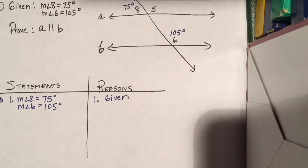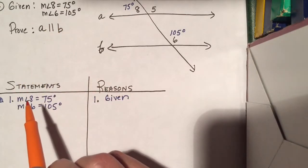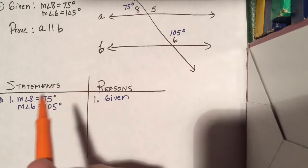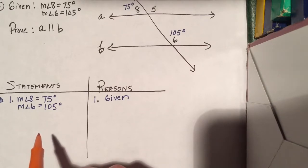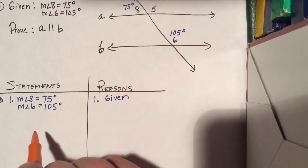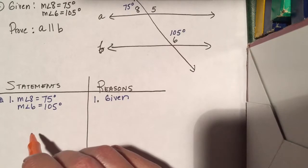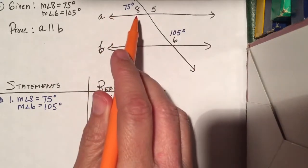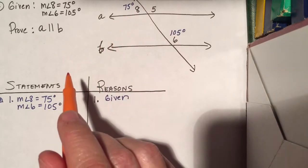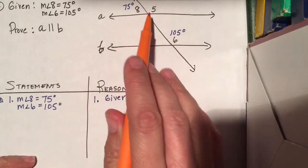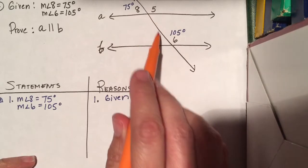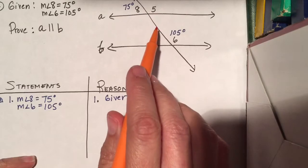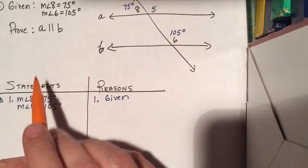Now let's look at the types of angles that we have. I'm trying to prove A and B are parallel. In order to do that, I have to prove that one of our special angle pairs — whether it be alternate interior angles, alternate exterior angles, or corresponding — are congruent. Or I have to prove that same side interior or same side exterior are supplementary, adding to 180. The only special type of angle pair created by a transversal that I have, besides the linear pair, is the corresponding angles. So my only option is really to prove that the corresponding angles are the same. If I can show that the corresponding angles are congruent, that would be enough to conclude that A is parallel to B.